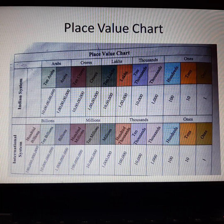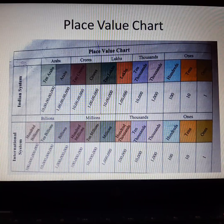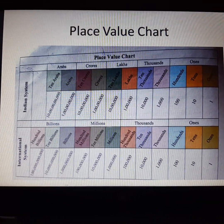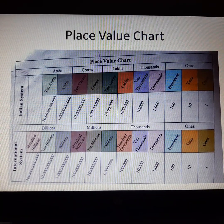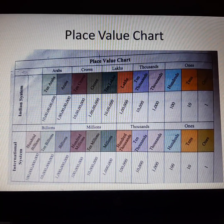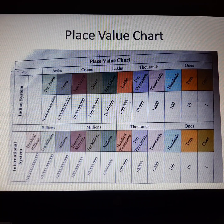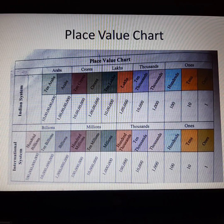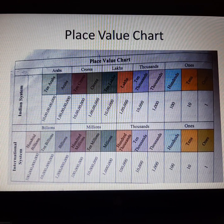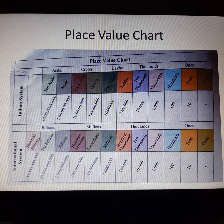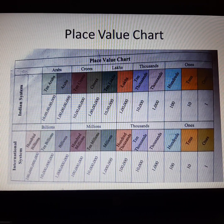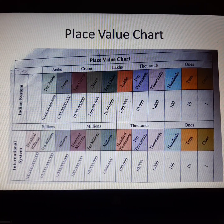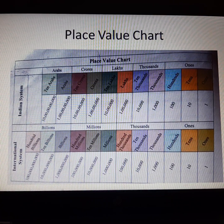The next place in the place value chart after 10 crore is Arab. You know very well we have two types of number system: first is the Indian place value chart, second is the international place value chart. When we add 1 to the greatest 9-digit number, it becomes the smallest 10-digit number and we read it as 1 Arab. And when we add 1 to the greatest 10-digit number, it becomes an 11-digit number, which we read as 10 Arab, according to the Indian number system.